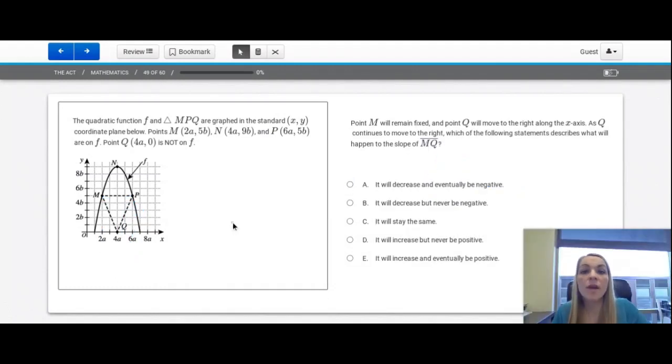Question number 49. Point M will remain fixed. That means it'll stay in the same spot. And point Q will move to the right along the x-axis. So this point right here is going to be moving in this direction. As Q continues to move to the right, which of the following statements describes what will happen to the slope of MQ? In these problems, I think it's really nice to just put some numbers in. So let's just let B equal 1 and A equal 1. And then in that case, along the x-axis, we have 2, 4, 6, 8. And same thing here, 2, 4, 6, 8.